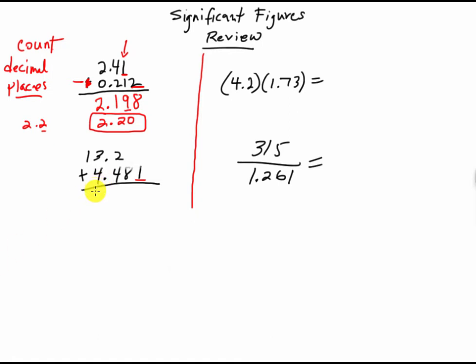13.2 plus 4.481 is going to give me 17.681. I have to round here to that place, to the tenth place. So that's where my significant figures is in. These don't count. We don't know what those numbers are at all. So anyway, we round this to 17.7, and there's my final answer. So counting decimal places when you're doing significant figures for adding and subtracting.